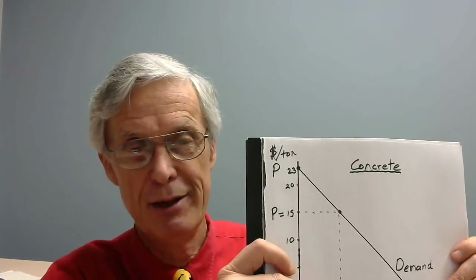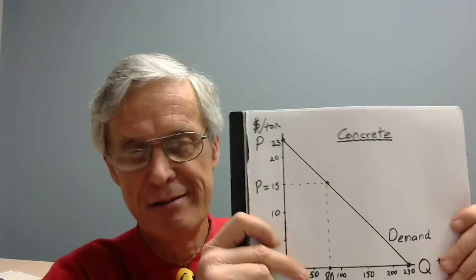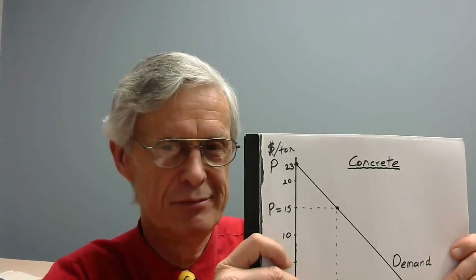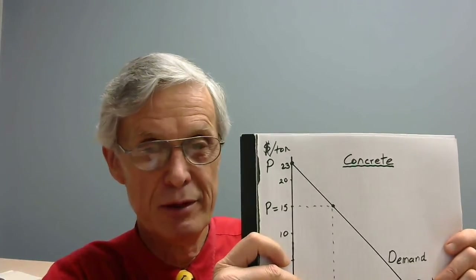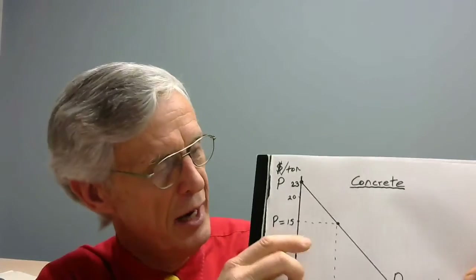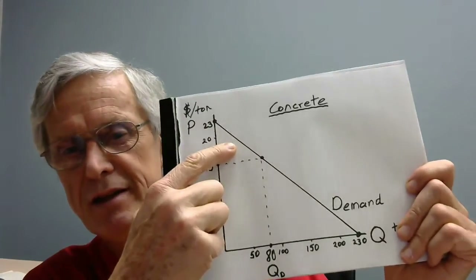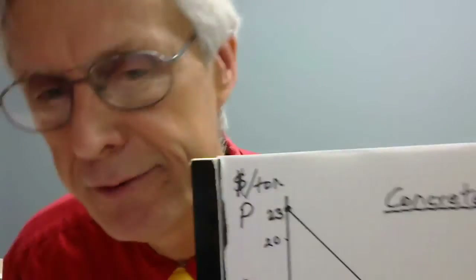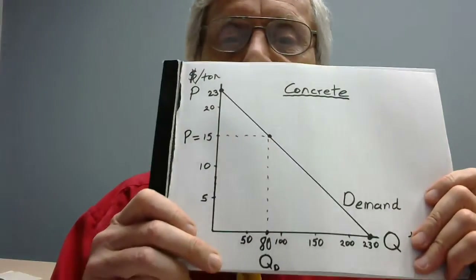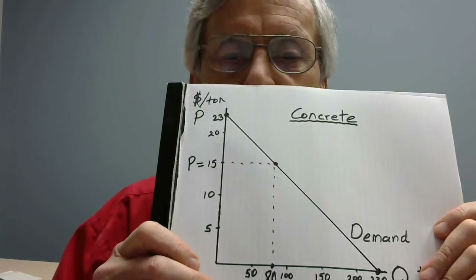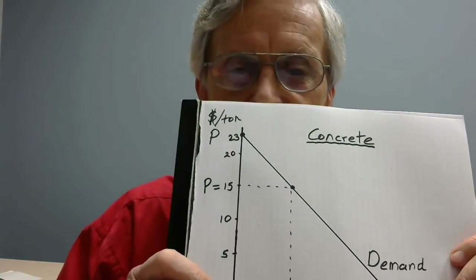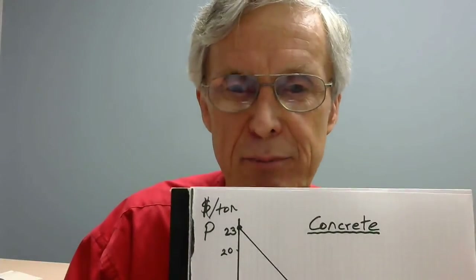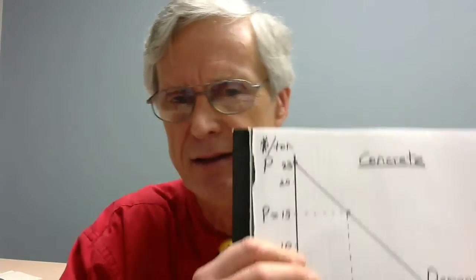You can stop the video and replay it. You can fast-forward, rewind, and silence me — you can't do that quite as well in class, though you can raise your hand and that'll stop me for a second. The buyers' gain from trade — the consumer surplus given these conditions — at $15 per ton given this demand for concrete as indicated by this demand line — would be $320 per day.